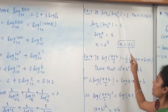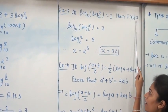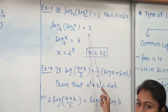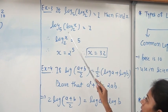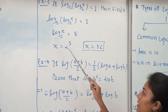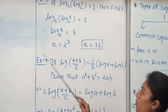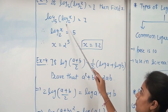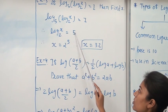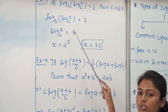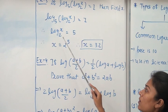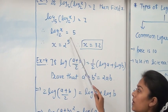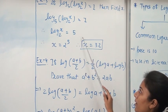Example 4: If log of log X base 2 base 5 equals 1, find the value of X. Since we have a logarithm of a logarithm, we convert to exponential form twice. First, writing in exponential form: log X base 2 equals 5 raised to 1, which equals 5. Converting log X base 2 equal to 5 into exponential form again: 2 is the base, 5 is the index, so X equals 2 raised to 5, which equals 32. Therefore, the value of X is 32.